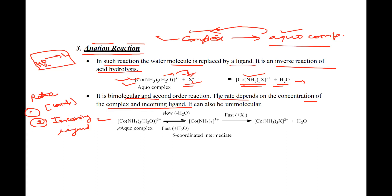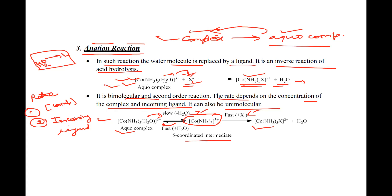If it is a pentamine aquo cobalt complex, in the slow step the aquo ligand will be removed, and in the fast step the incoming ligand will be associated. When the aquo ligand is removed, another ligand acts on this and a complex is formed. So it can be unimolecular with respect to a five-coordinate intermediate state. But if we consider the overall reaction, two molecules — complex and ligand — are participating, so that is why it is also described as bimolecular.